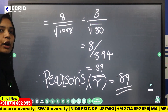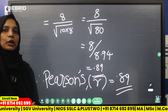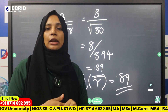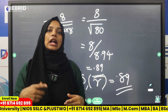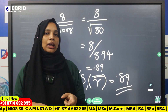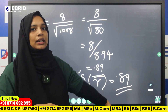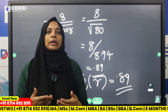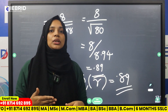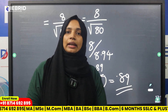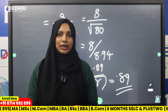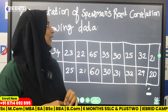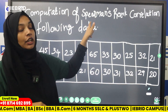Now we move to the Spearman Rank Correlation, which is another important question. We have Data 1 and Data 2 with n equal to 10. In this method, instead of raw scores, we assign ranks to the data — rank x and rank y.